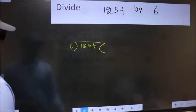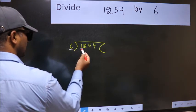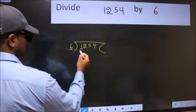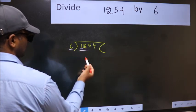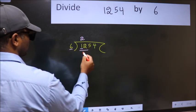Next, here we have 1 and here 6. 1 is smaller than 6, so we should take 2 numbers, 12. When do we get 12 in 6 table? 6 times 2 is 12.